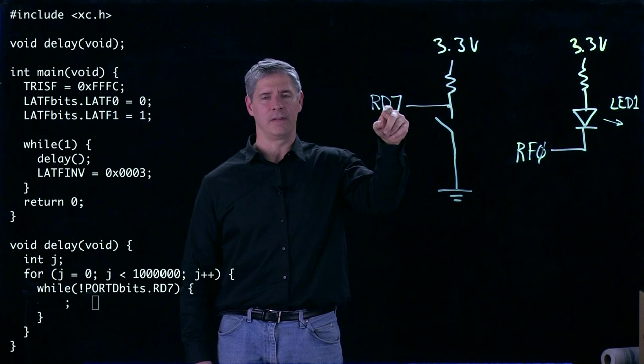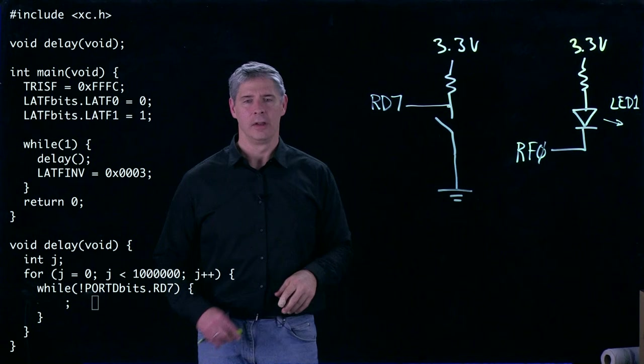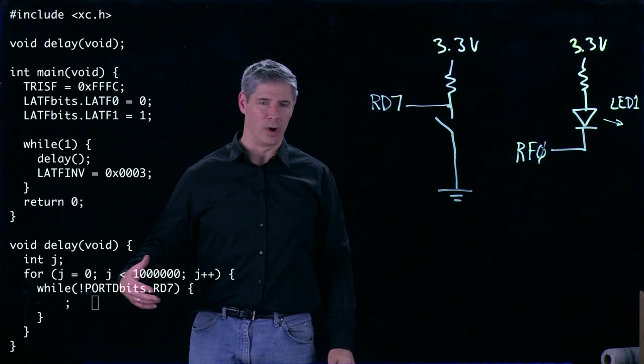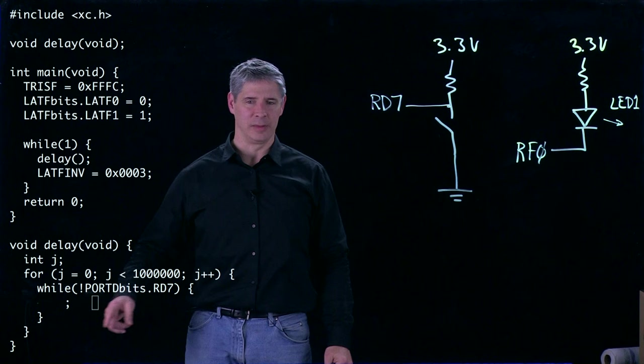So if the user is not pressing the button, then RD7, the user input, is going to read high. But if the user presses the button, then it's going to read low. So now if we come down here, we can see if the user is not pressing the button, it's reading high, so it's reading one at RD7. We take a negative of that, that one or logical true becomes a logical false. So we're going to exit this while loop and just keep doing the for loop. And so we're going to run out of this delay very quickly.